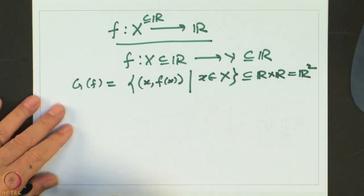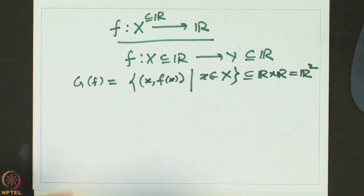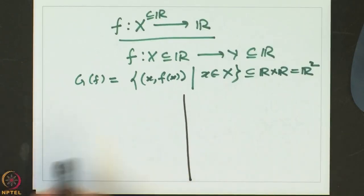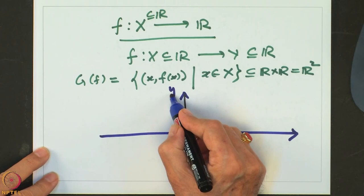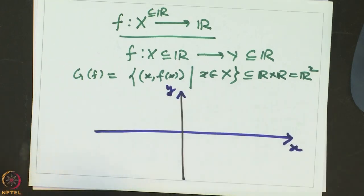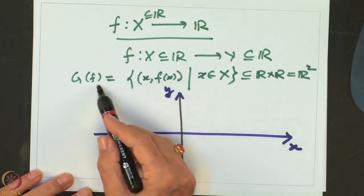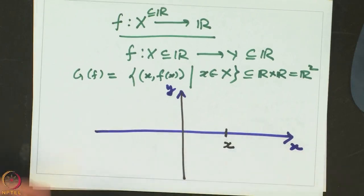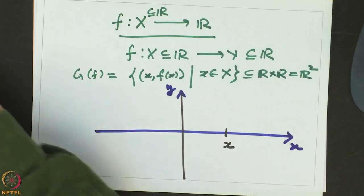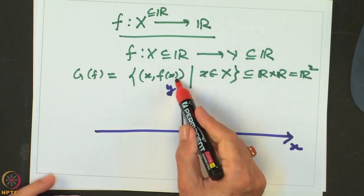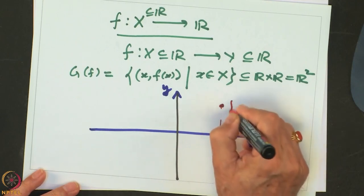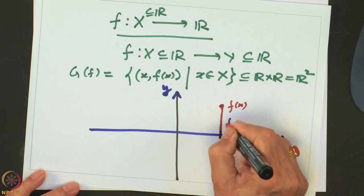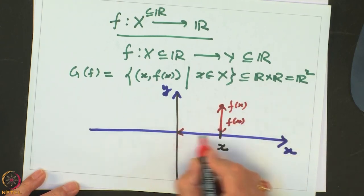The graph of F is a subset of R cross R, that is R2. To represent it graphically, we take the X axis and Y axis as before. For any point X, we take X units along the horizontal axis, then move F(X) units vertically to get the point (X, F(X)). Collecting all such points gives the geometric graph of the function F.